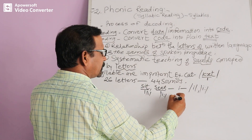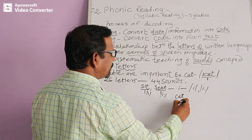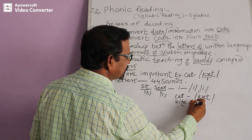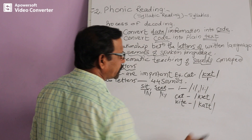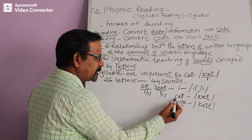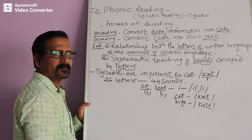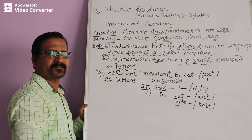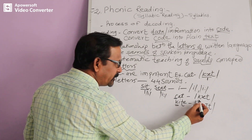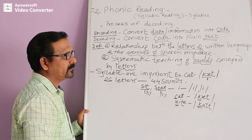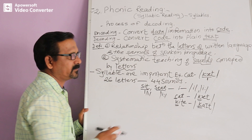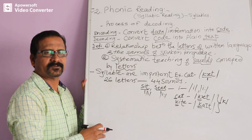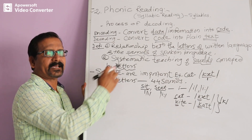Take another example: 'cat' and 'kite'. The spelling of 'cat' starts with C, and 'kite' starts with K. But in phonemic transcription, C and K stand for a single sound — the /k/ sound. So we have 44 sounds even though we have only 26 letters.